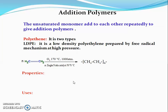Addition polymers can be divided into types. First is polyethylene, which has two types based on density: low density polyethylene and high density polyethylene. Low density polyethylene has low density and is prepared by a free-radical mechanism at high pressure.